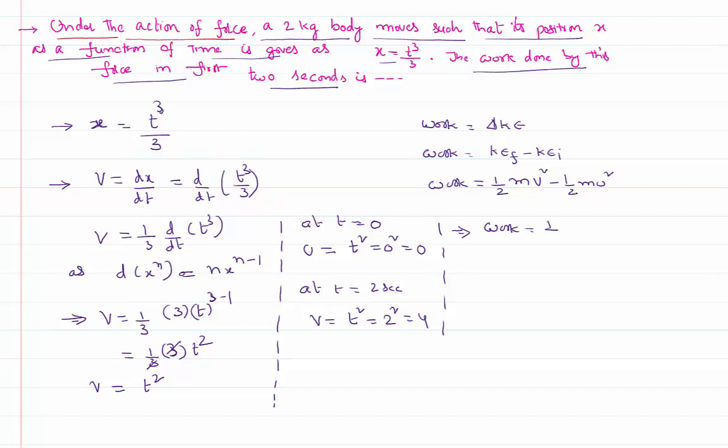Work done equal to half m, v square minus u square. m is given in the problem as 2 kilogram. v square is nothing but 4 square. u square is nothing but equal to 0 square. This half and this 2 will cancel. 4 square is 16 minus 0, that is 16. So the work done in this process is nothing but equal to 16 joule.